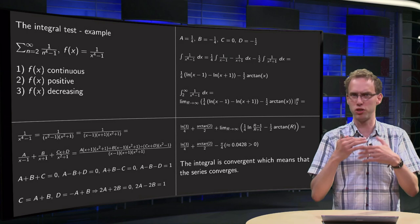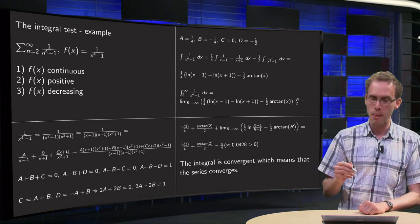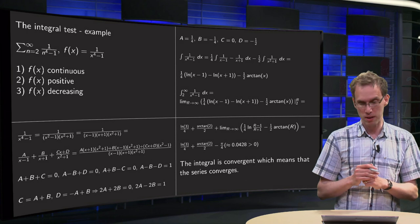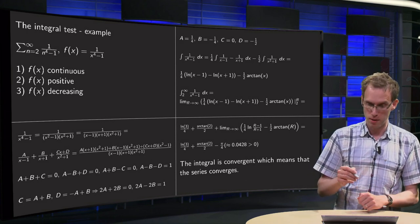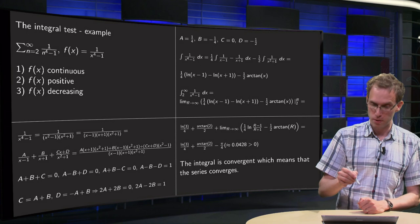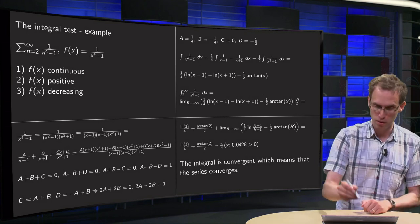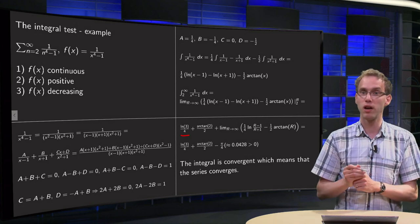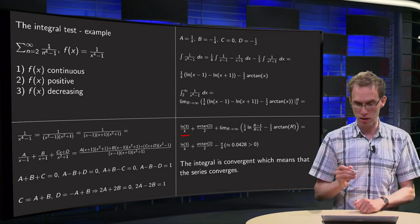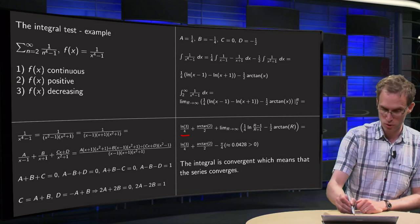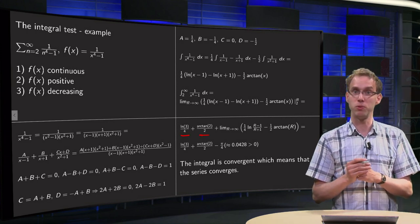Let's first do the lower boundary at x = 2, which is just a constant. We get (1/4)ln(1) = 0, minus (1/4)ln(3), but we are at the lower bound so that becomes +ln(3)/4. And we get -(1/2)arctan(2), which at the lower boundary becomes +arctan(2)/2.